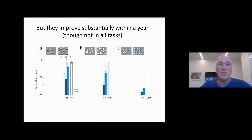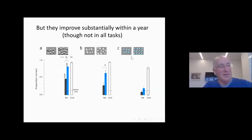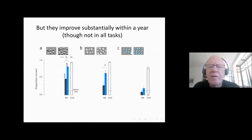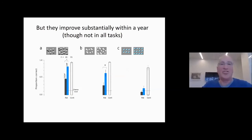Interestingly, when we tested them a year or two years later, we find that they actually improved in the tests. Shape from shading is no longer a problem if you test them later, and also occlusion — this is not yet published. But that is the case as we test them longitudinally with time. Interestingly, to tell 3D shape in the tubes, they still have a problem. It's not that they improve in all tests, but they seem to be improving in many of them.